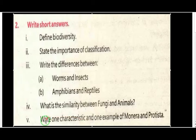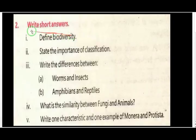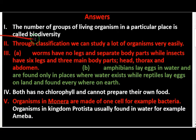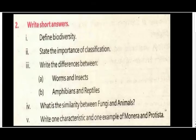Write one characteristic and one example of Monera and Protista — the five kingdoms. Find biodiversity: the number of groups of living organisms in a particular place is called biodiversity. State the importance of classification.